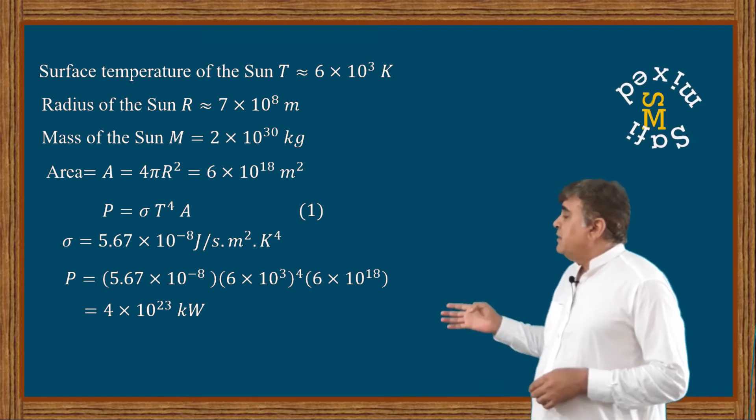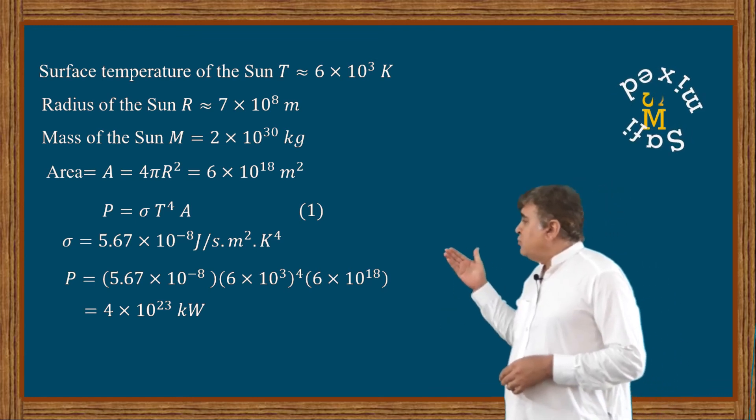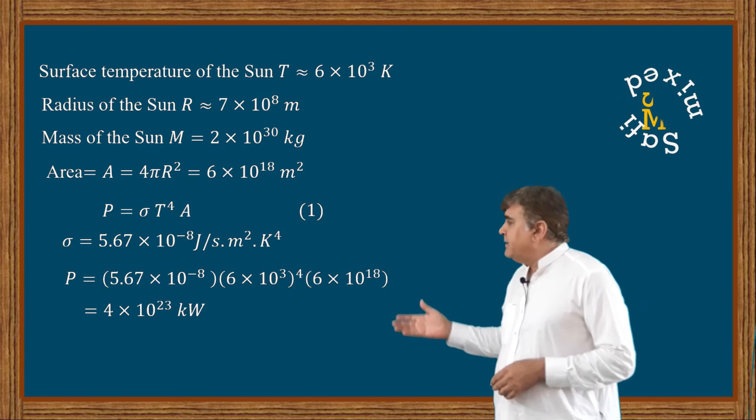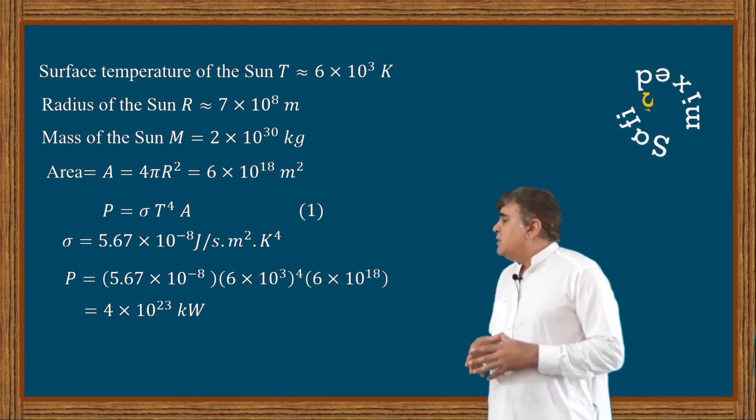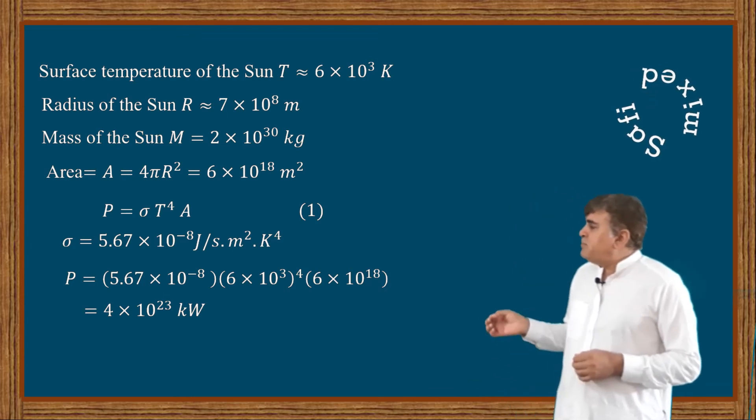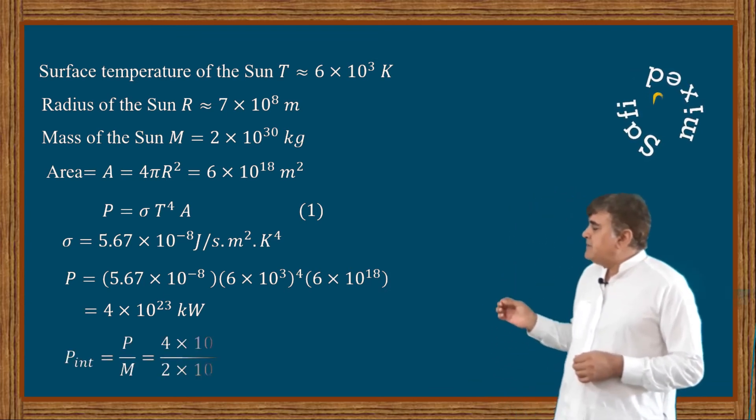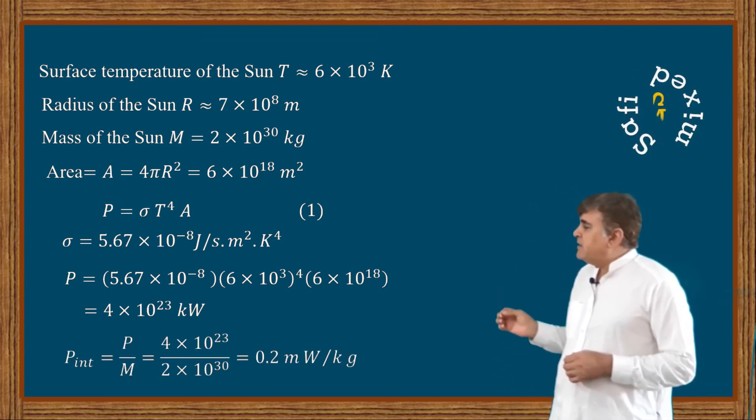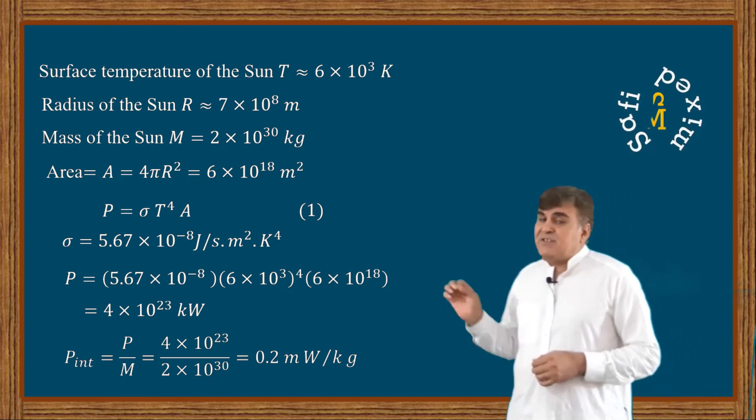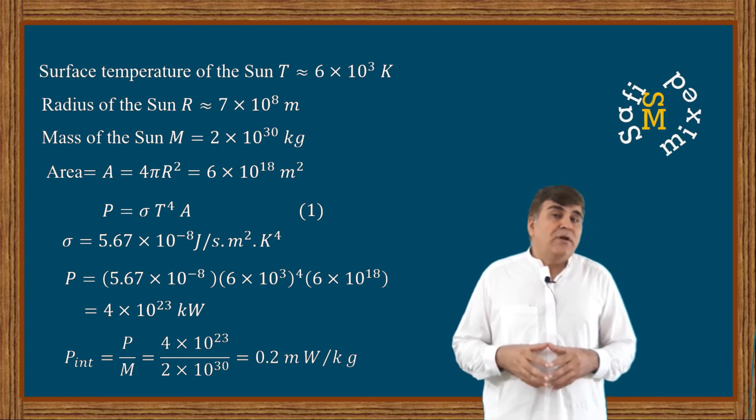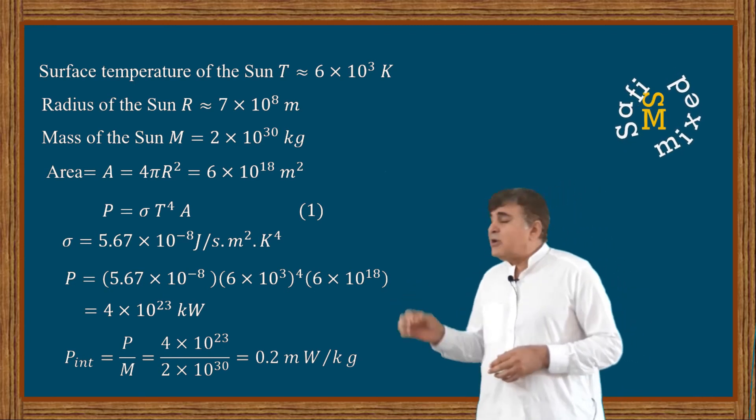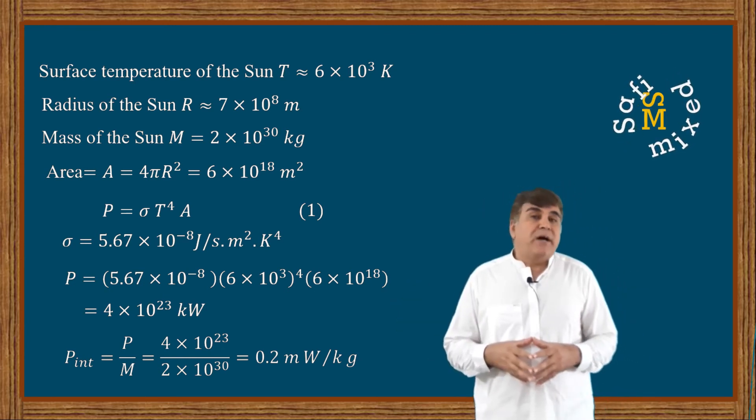Now let us divide this total power of the Sun by the mass of the Sun to obtain power per unit mass, which I call the intrinsic power of the Sun: P_int = P/M, which results in 0.2 milliwatts per kilogram.